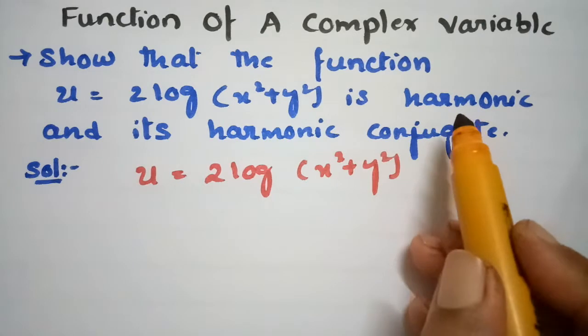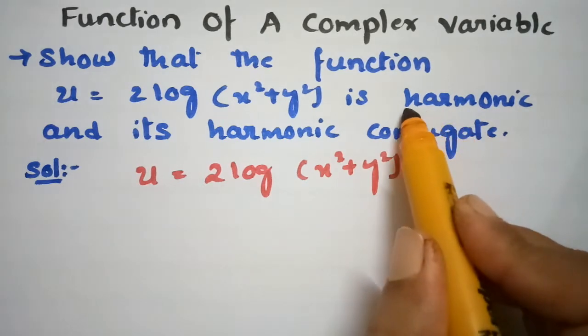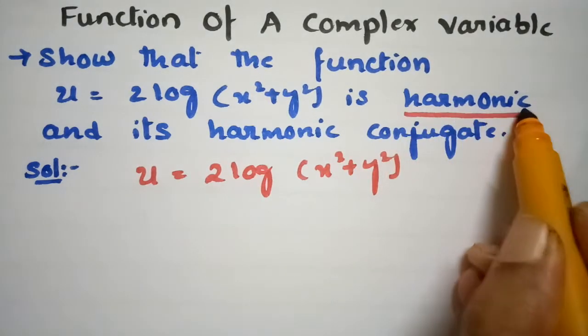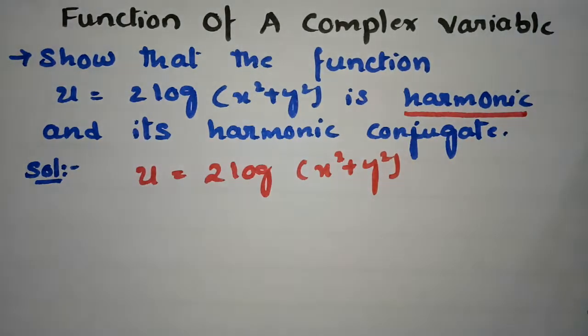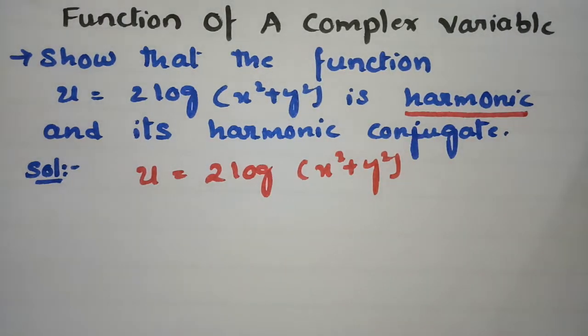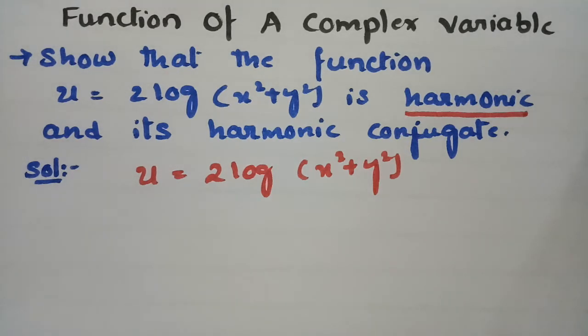We have to show that u is harmonic. In order to show u is harmonic, u should satisfy the Laplacian equation. So, dou square u by dou x square plus dou square u by dou y square should be equal to 0.